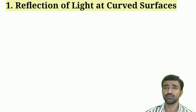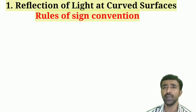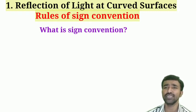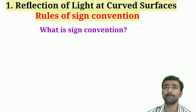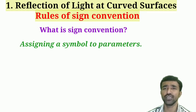Hello students, welcome to the class. This class topic is sign convention rules of spherical mirrors. Sign convention means you are applying a symbol for the parameter — conveying the symbol sign plus or minus. So why do we need to apply the sign for the parameters?